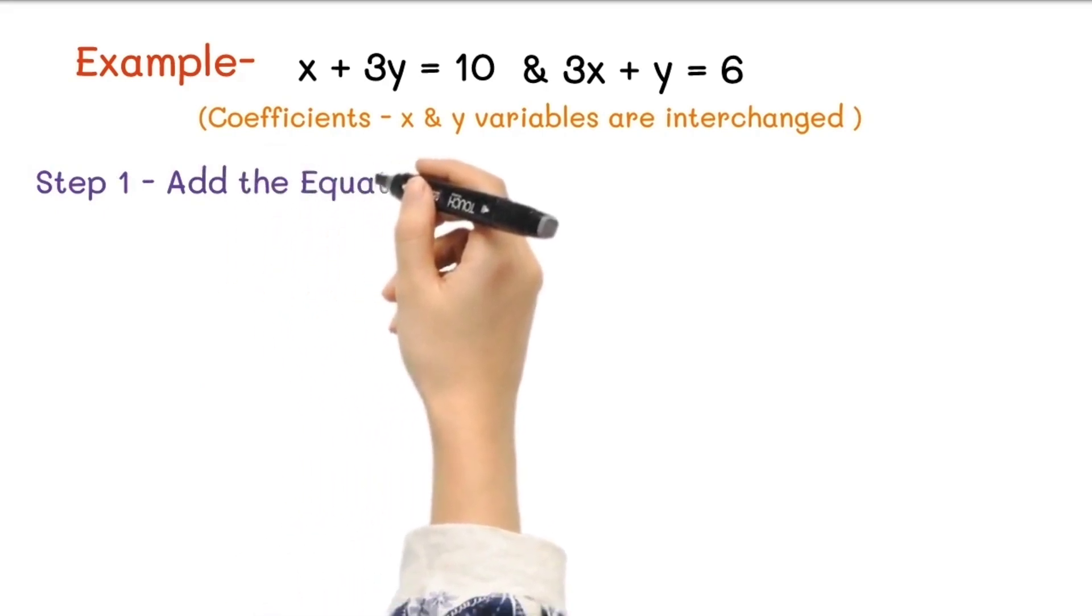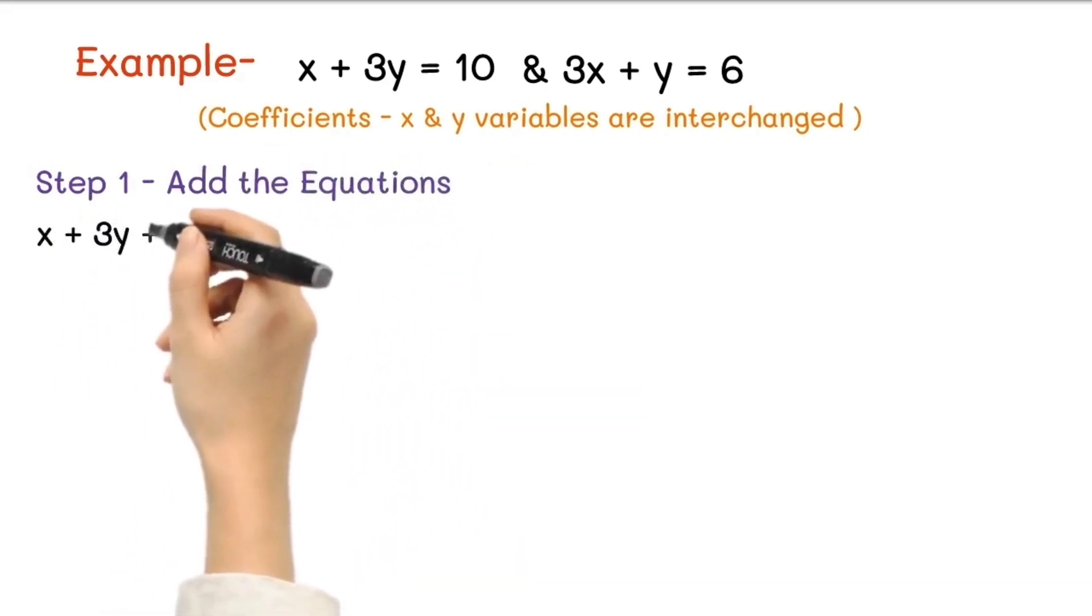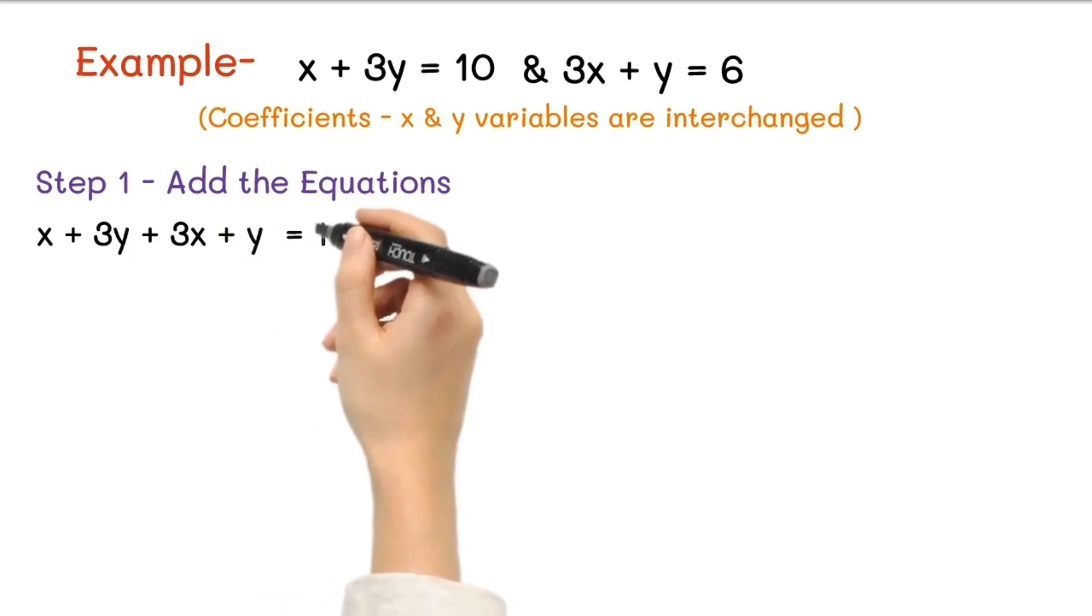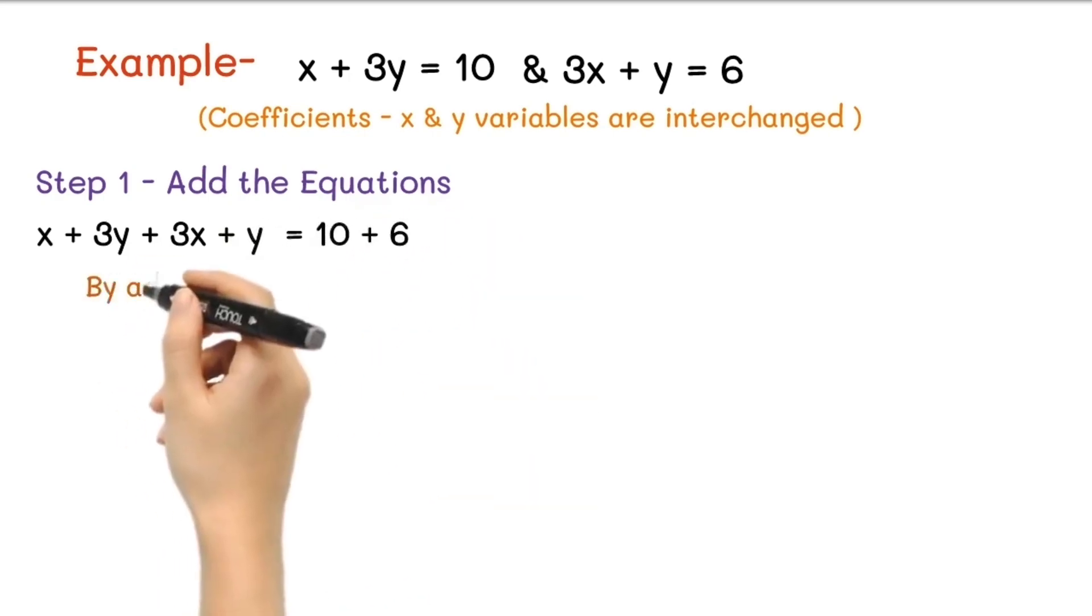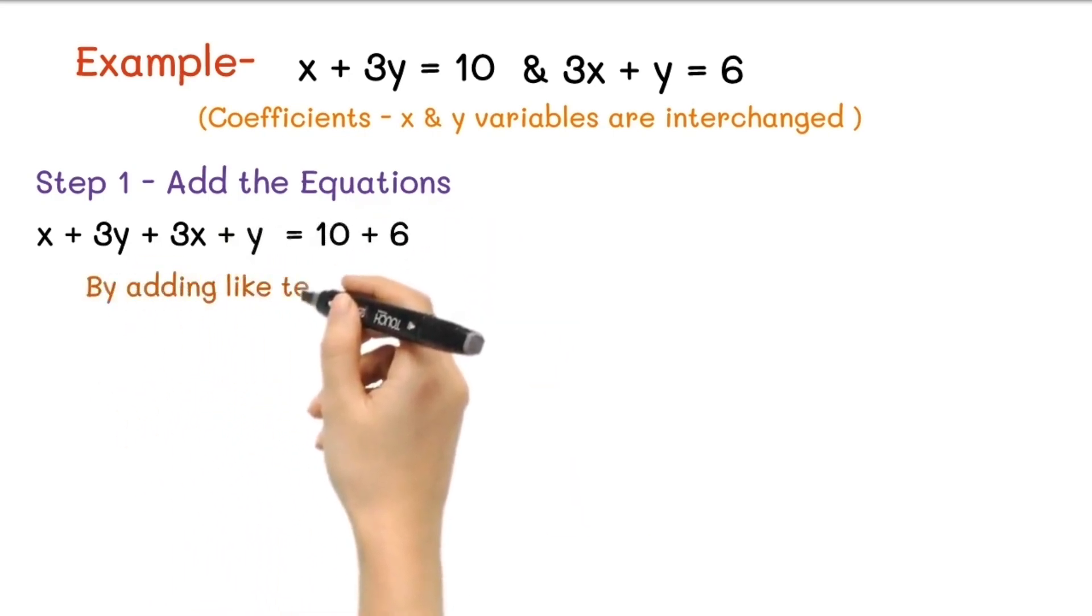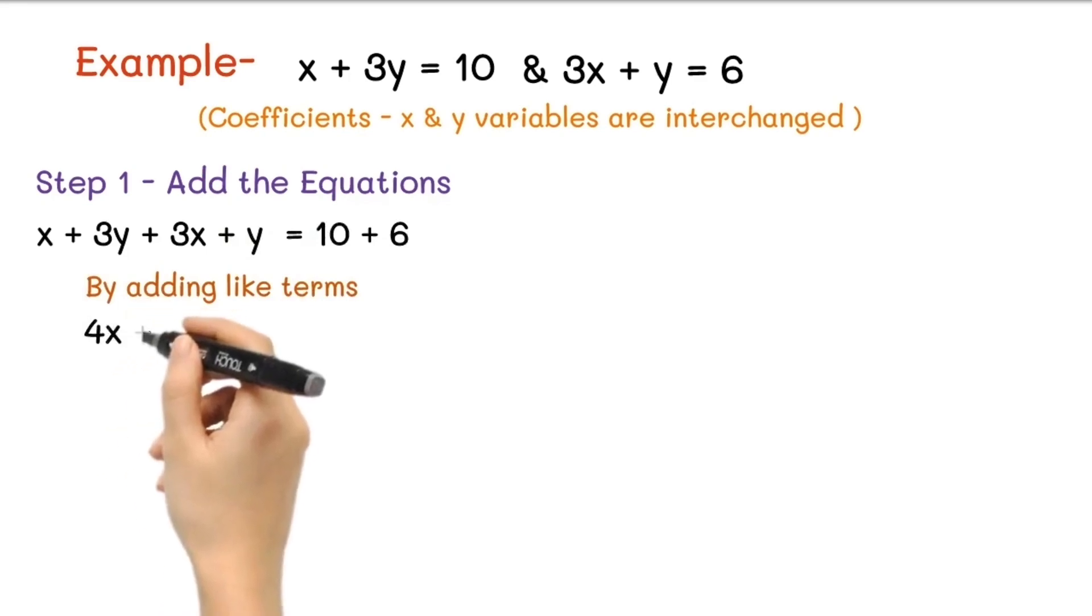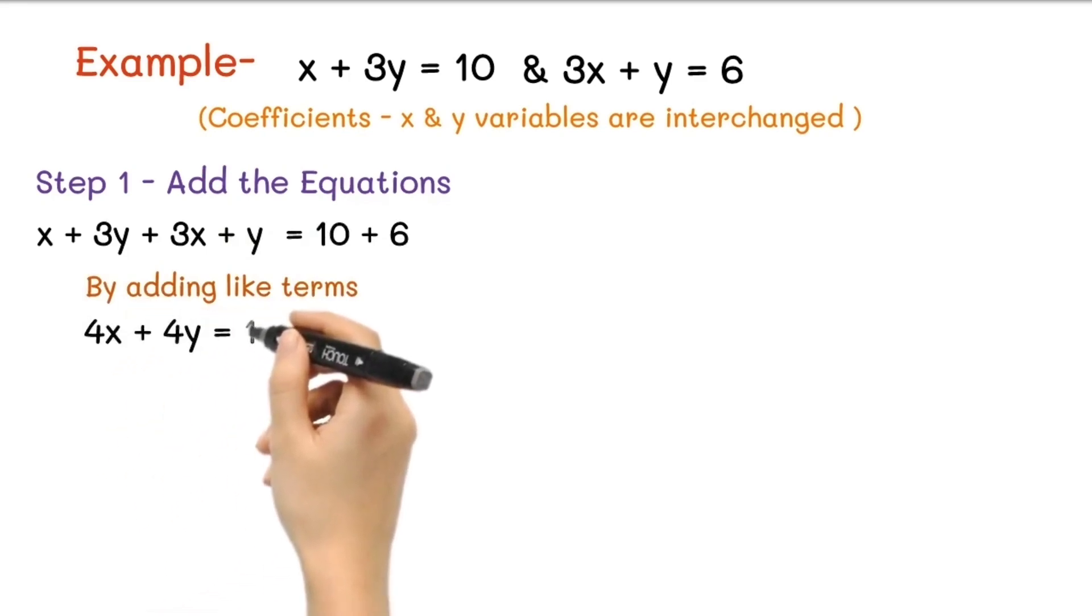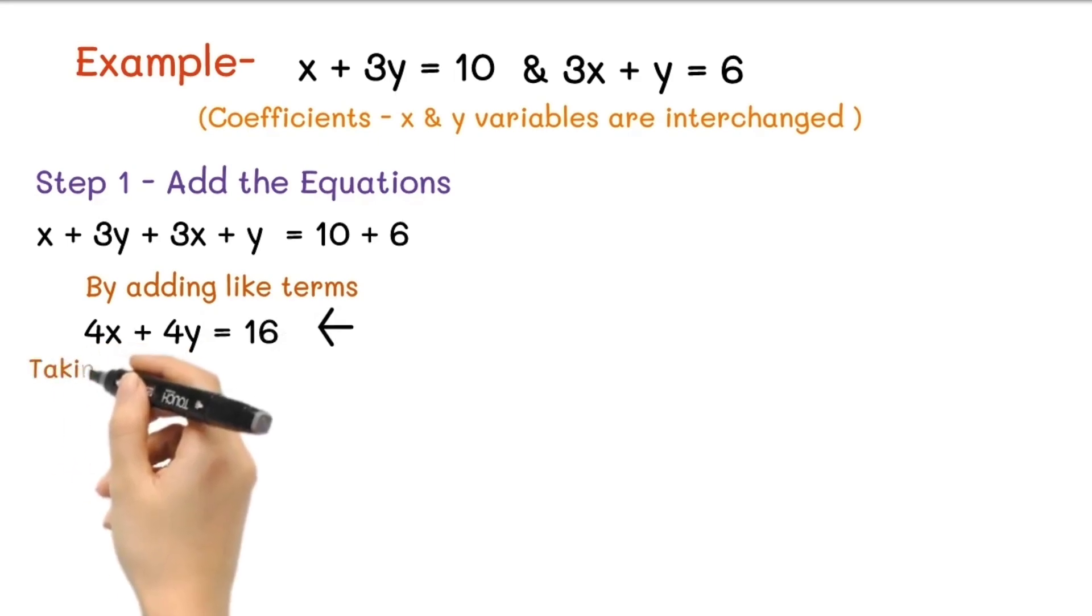That is, x + 3y + 3x + y = 10 + 6. By adding like terms, we will get 4x + 4y = 16. Now you can observe that 4 is a common factor on both sides, so taking 4 as a common factor we get x + y = 4, equation 1.